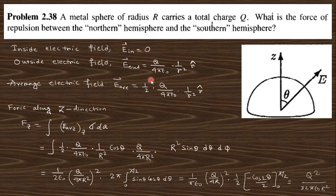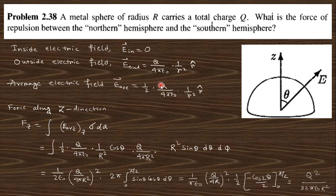If we take the force on the northern hemisphere in the z-direction — because the other components cancel out by symmetry — the z-component of the electric field is E·cosθ. So the force along z is obtained by integrating the electric field in the z-direction, which at the surface (small r = R) gives the 1/(4πε₀R²) term multiplied by the cosθ component.